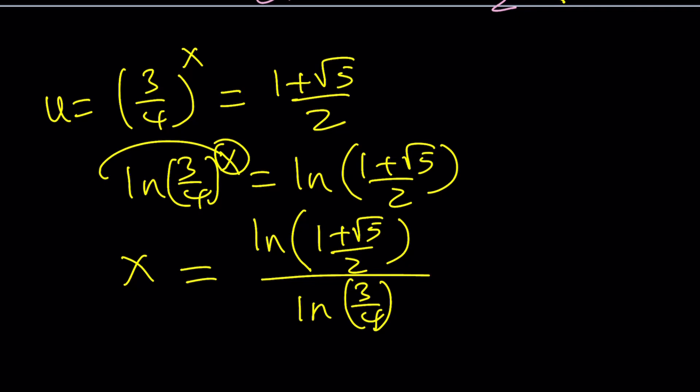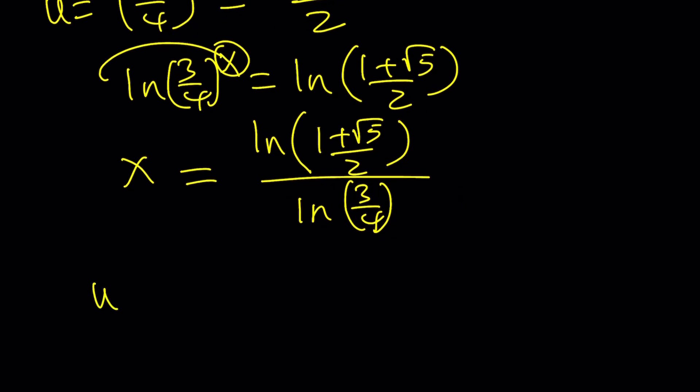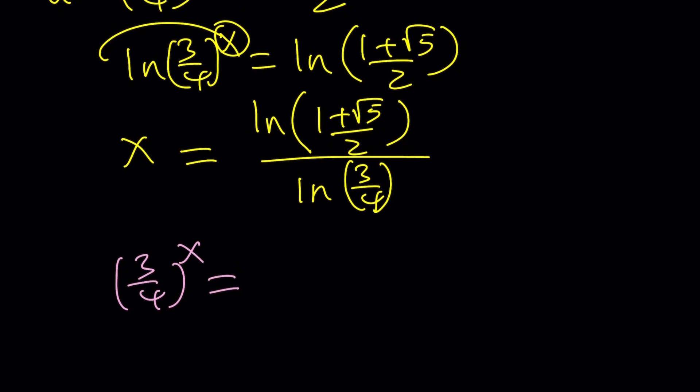But, of course, couldn't we find any complex solutions from here? We should be able to. So, let's go ahead and do the following. Let's set, so I want to go ahead and set 3 over 4 to the power x to 1 plus root 5 over 2. But, I want to write that as 1 plus root 5 over 2 multiplied by e to the power. This is how you can complexify any real number, as long as it's positive, of course.